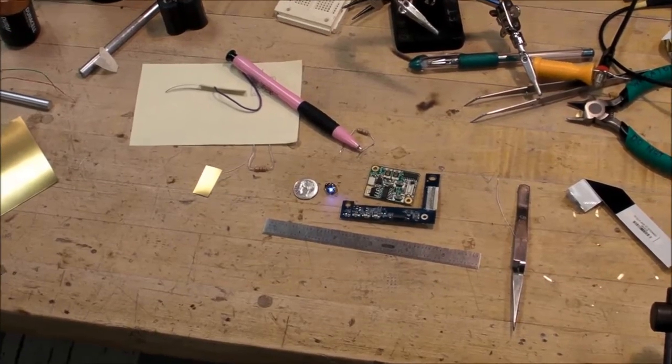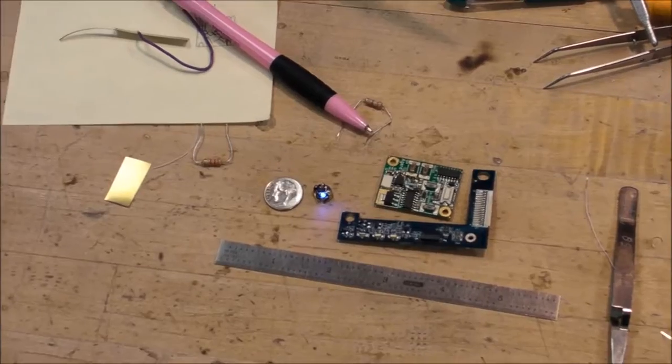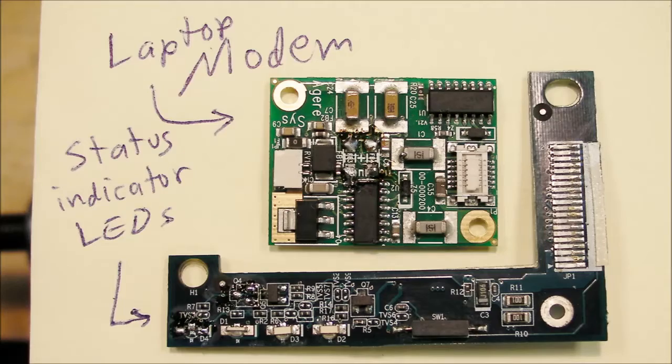And I got all those parts out of some laptop parts. Here, the modem, I got the transformer off of it. That was the isolation transformer for the modem. And I got the LED, the transistor, and the resistor off of the indicator board from the front of the laptop.